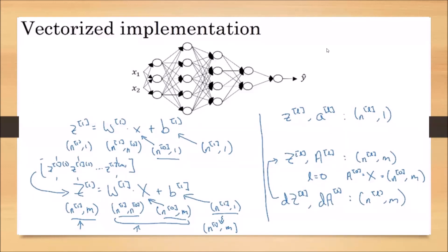We have completed the forward propagation and learned how to implement the vectorized version. Even if there are a thousand layers in the neural network, we now know the technique to find the activation units of any layer using the vectorized implementation.